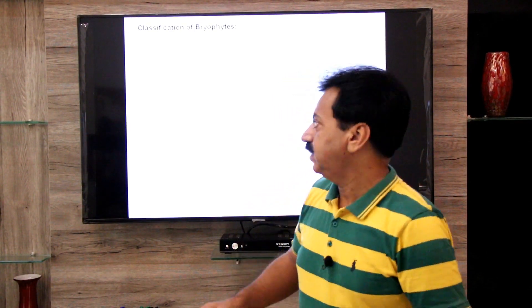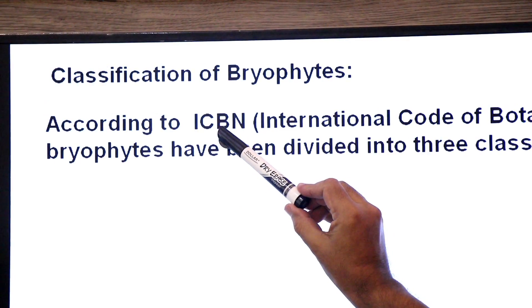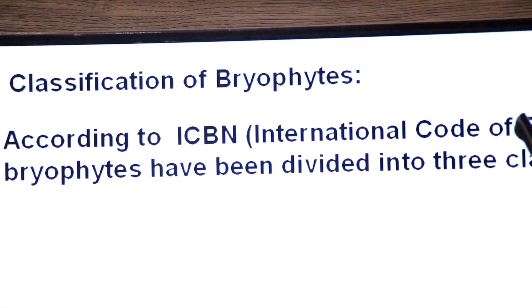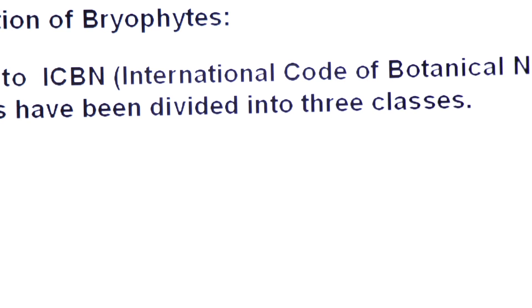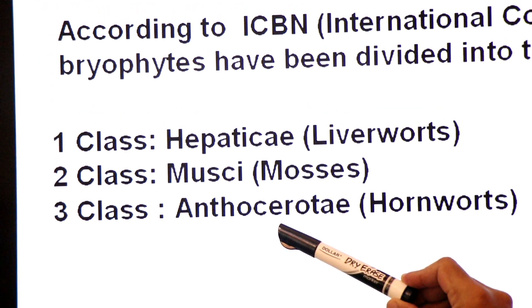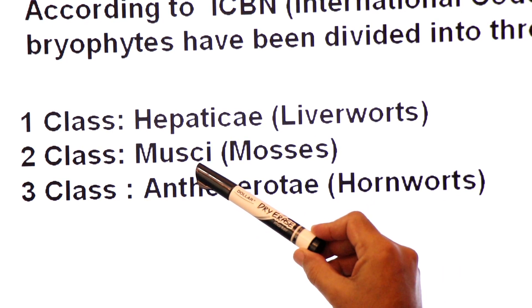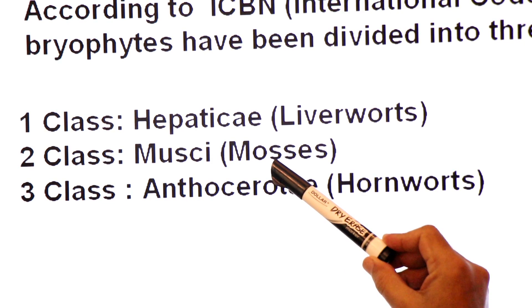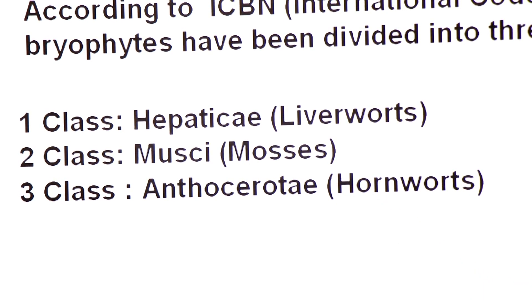Assalamu alaikum, namaste dear students. Today I am with you to discuss the classification of Division Bryophyta. According to ICBN — the International Code of Botanical Nomenclature — bryophytes have been divided into three classes: Class Hepatici, Class Musci, and Class Anthocerotae. Class Hepatici members are commonly known as liverworts, Class Musci as mosses, and Class Anthocerotae as hornworts.